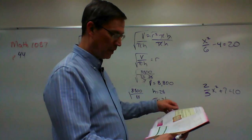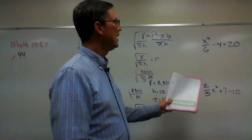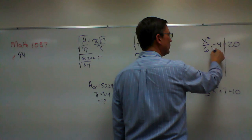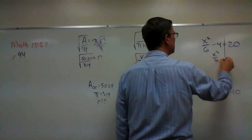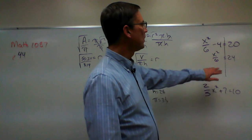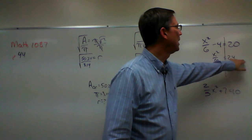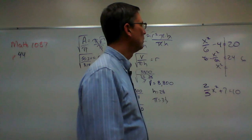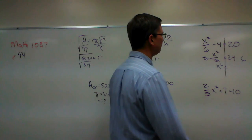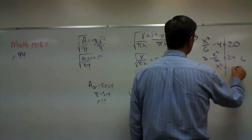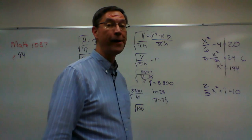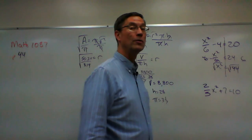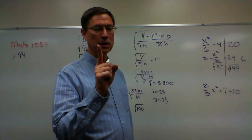Let's jump to page 46 — we have some problems like this. Remember, we undo addition or subtraction first. So I'm going to add 4 to the other side, giving x squared over 6 equals 24. Then we get rid of the denominator first, so we multiply both sides by 6, and that cancels. X squared equals 24 times 6 — that's 144. To solve for x, we do the square root of x squared and the square root of 144. Without a calculator, you should know the square root of 144.